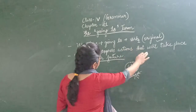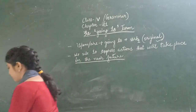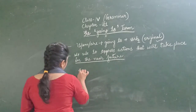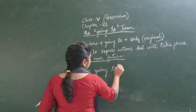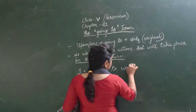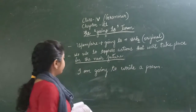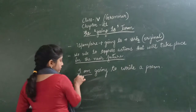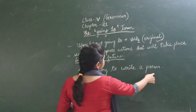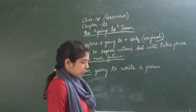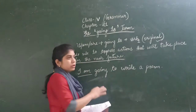So: I am going to verb. This you can easily understand with the help of some examples. Like: I am going to write a poem. So I is always used with am. I am going to write a poem — it means I am just about to write a poem.